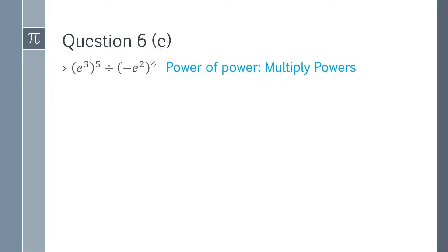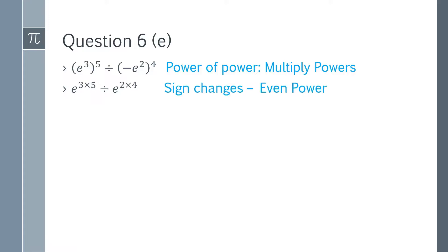Question 6e: (e³)⁵ divided by (−e²)⁴. We apply the power of power rule and expand. It becomes e to the power 3 times 5, and e to the power 2 times 4. Since the power is even, we change the sign from negative to positive. So e³ˣ⁵ gives e¹⁵, and e²ˣ⁴ gives e⁸. We subtract the powers: e to the power 15 minus 8, which simplifies to e⁷. That is the answer for question 6e.